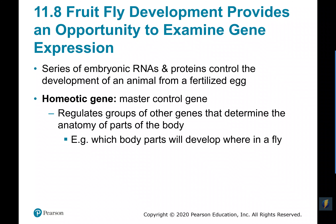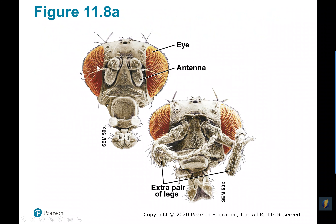There is a series of RNA and proteins in the embryo that control the development of the fruit fly from a fertilized egg. What they have found is that there's a master control gene called a homeotic gene, and it regulates other groups of genes that will determine the different anatomy of these fruit flies — like where a particular body part develops, such as genes for the eyes, antennas, or an extra pair of legs.